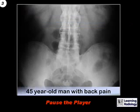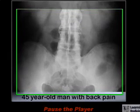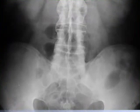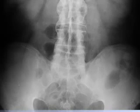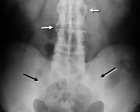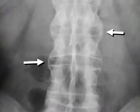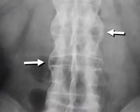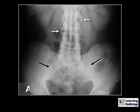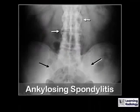The next case is a 45-year-old man with back pain. In this case, the sacroiliac joints are both fused, and there are thin syndesmophytes that join each of the vertebral bodies in the lumbar spine. This is ankylosing spondylitis.